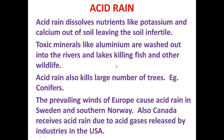Acid rain dissolves nutrients like potassium and calcium out of soil, leaving it infertile. Toxic minerals like aluminium are washed into rivers and lakes, killing fish and other wildlife. Acid rain also kills large numbers of trees like conifers. The prevailing winds of Europe carry acid gases over Sweden and southern Norway, causing acid rain there.